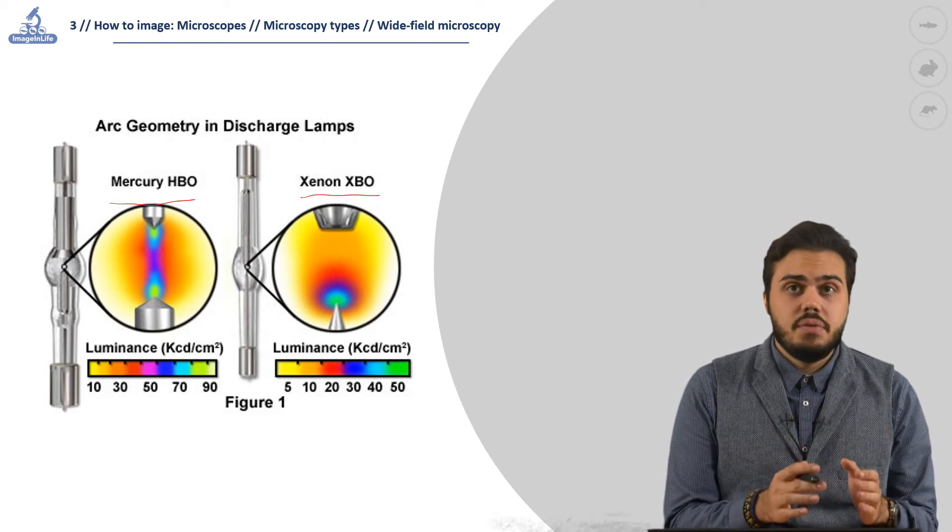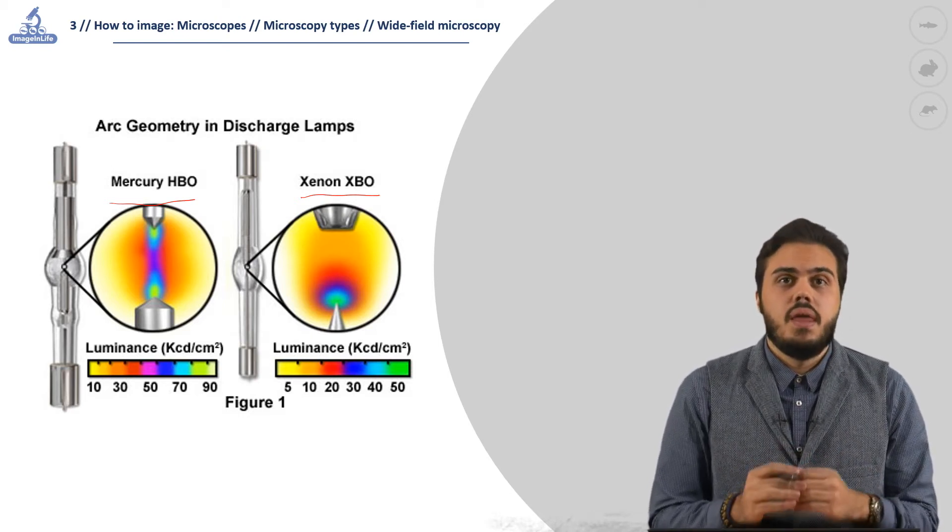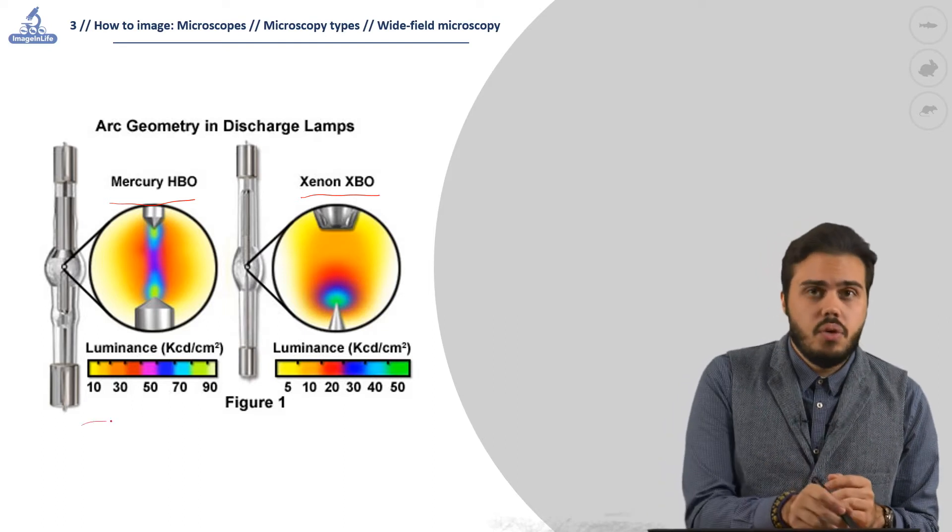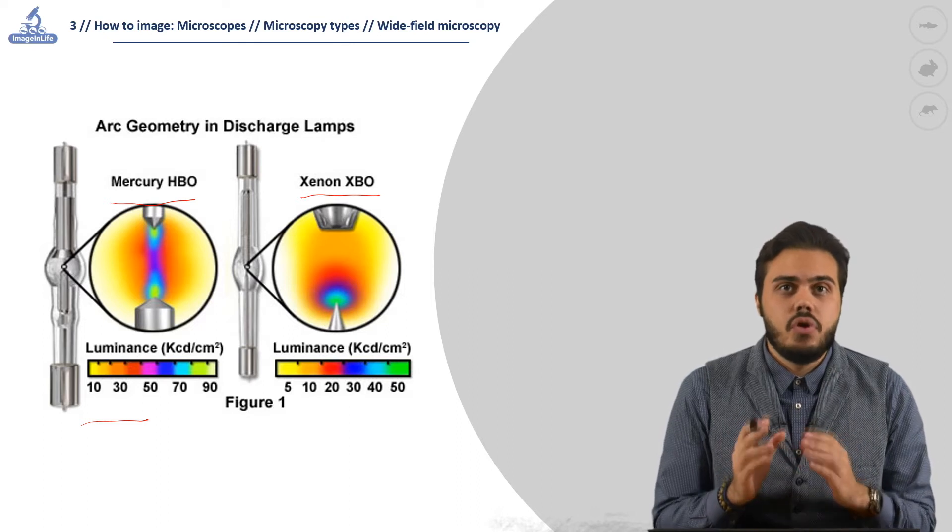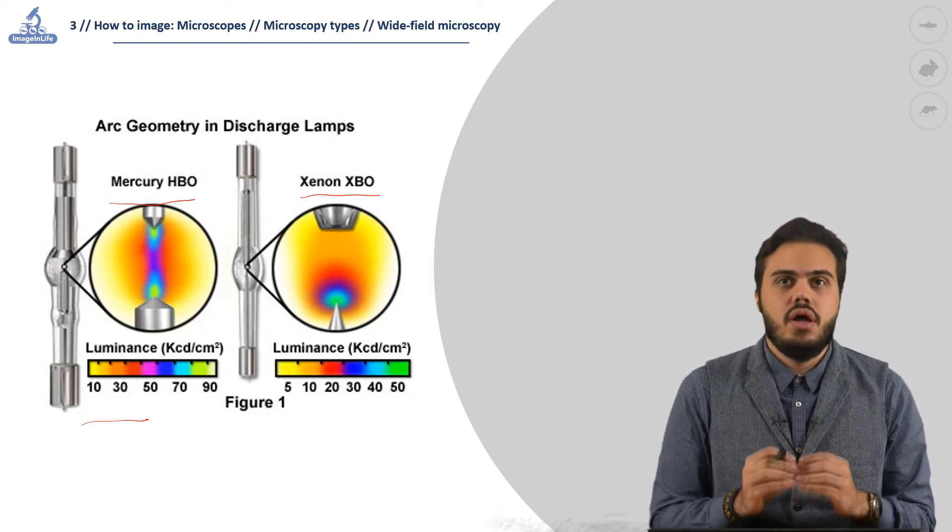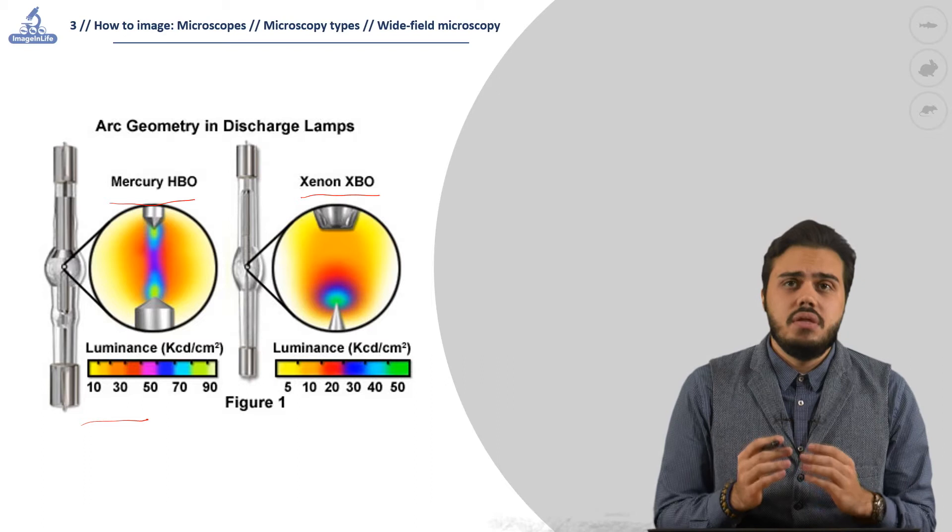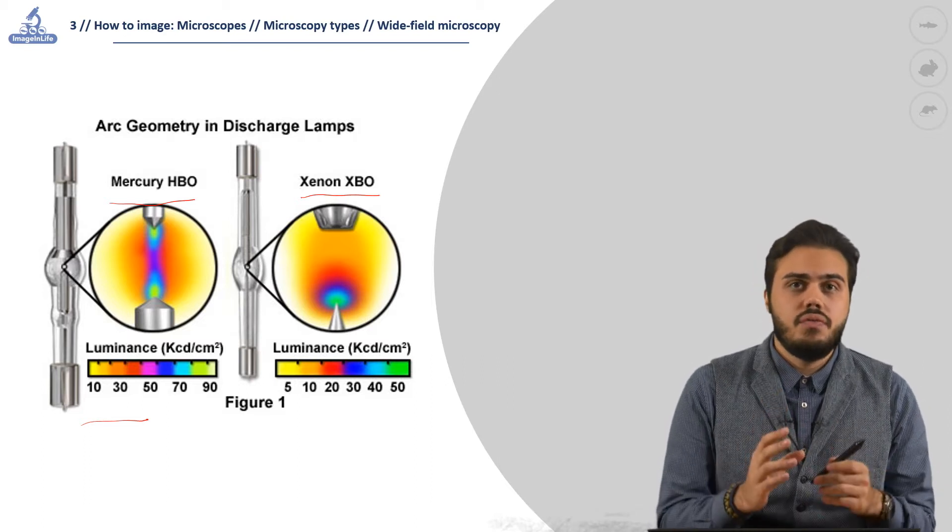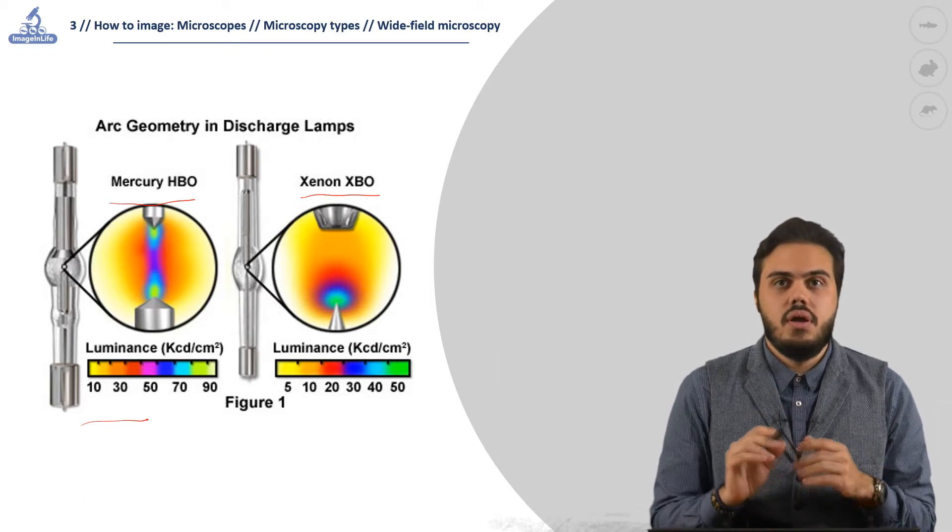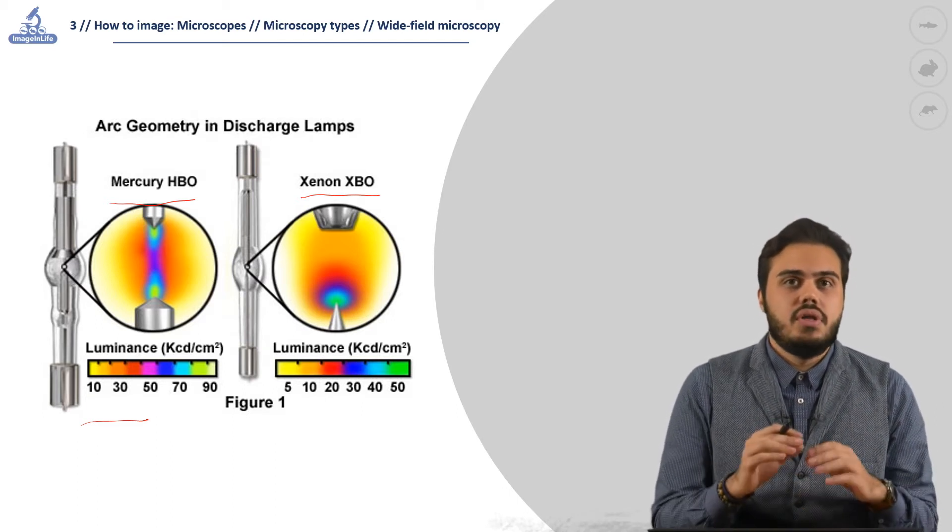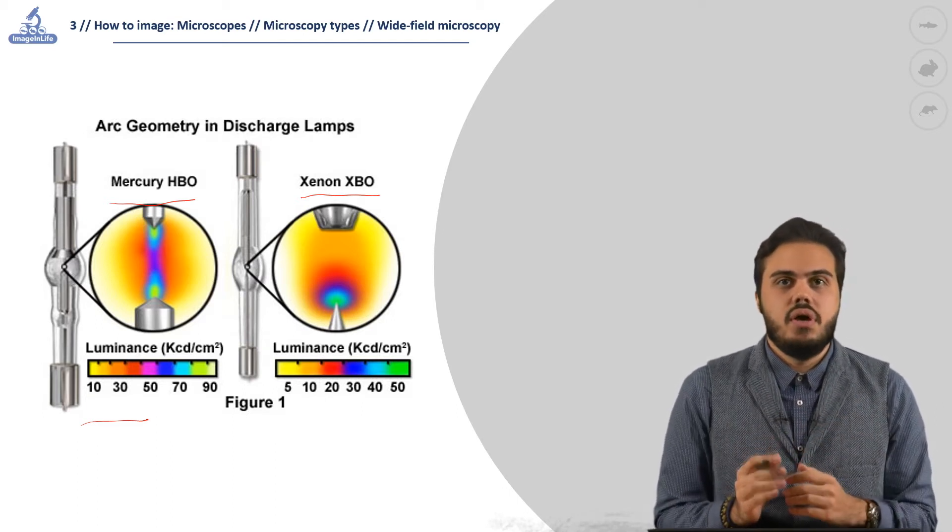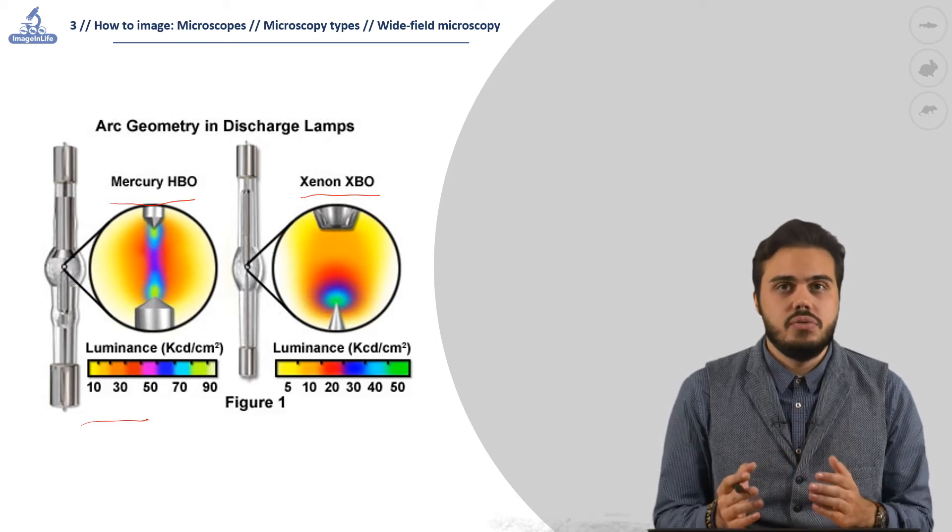The arc lamps have a reduced lifespan—300 hours for the mercury one and 600 hours for xenon—and this lifespan is greatly reduced by switching on and off the lamp. This means that the user has to carefully keep track of the usage of the lamp. The lamps over the lifespan have the risk of exploding and need to be disposed carefully with special procedures.